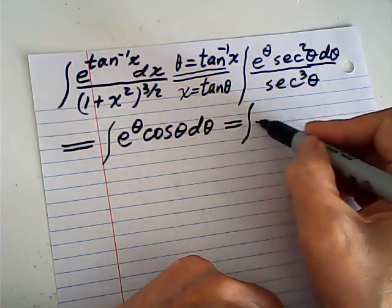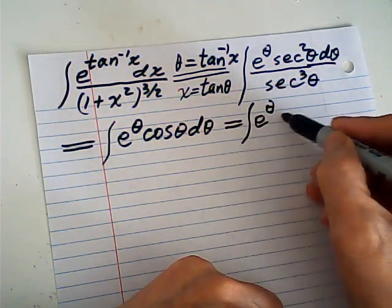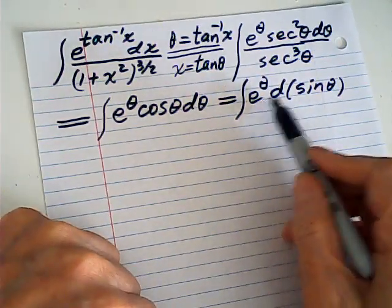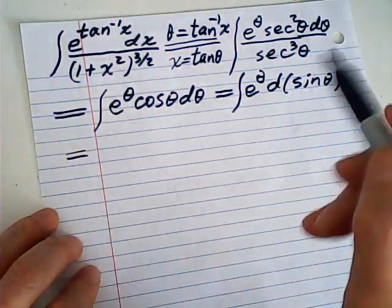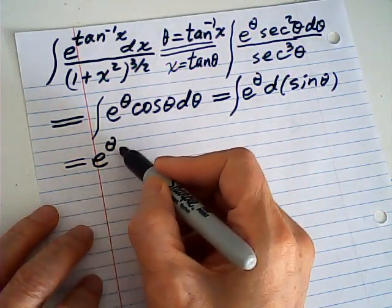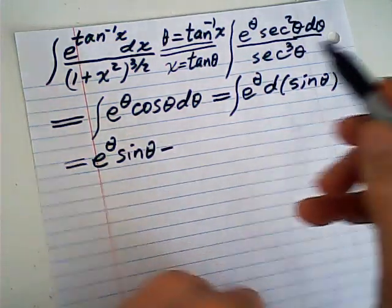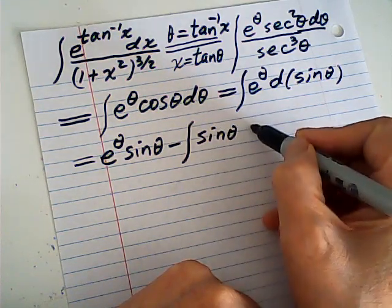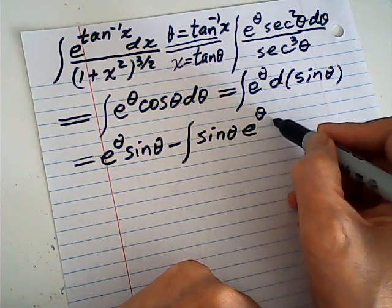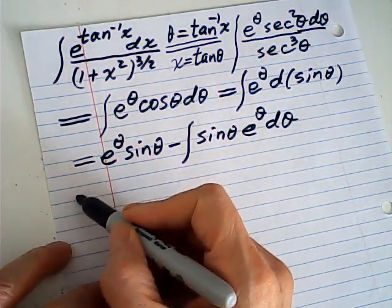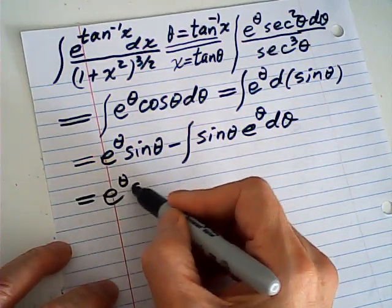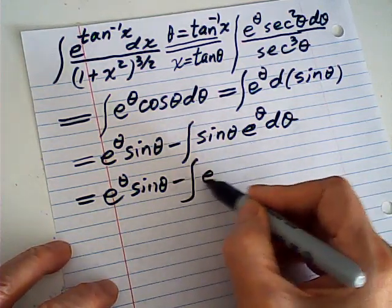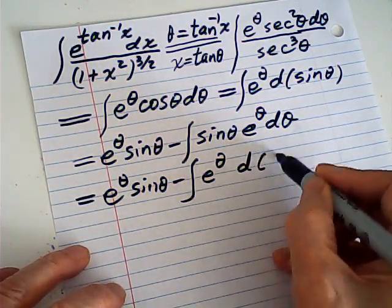Using integration by parts: u is cosine theta, dv is e to the theta. The formula gives uv minus the integral of v du, where v is e to the power theta and du is negative sine theta d theta.